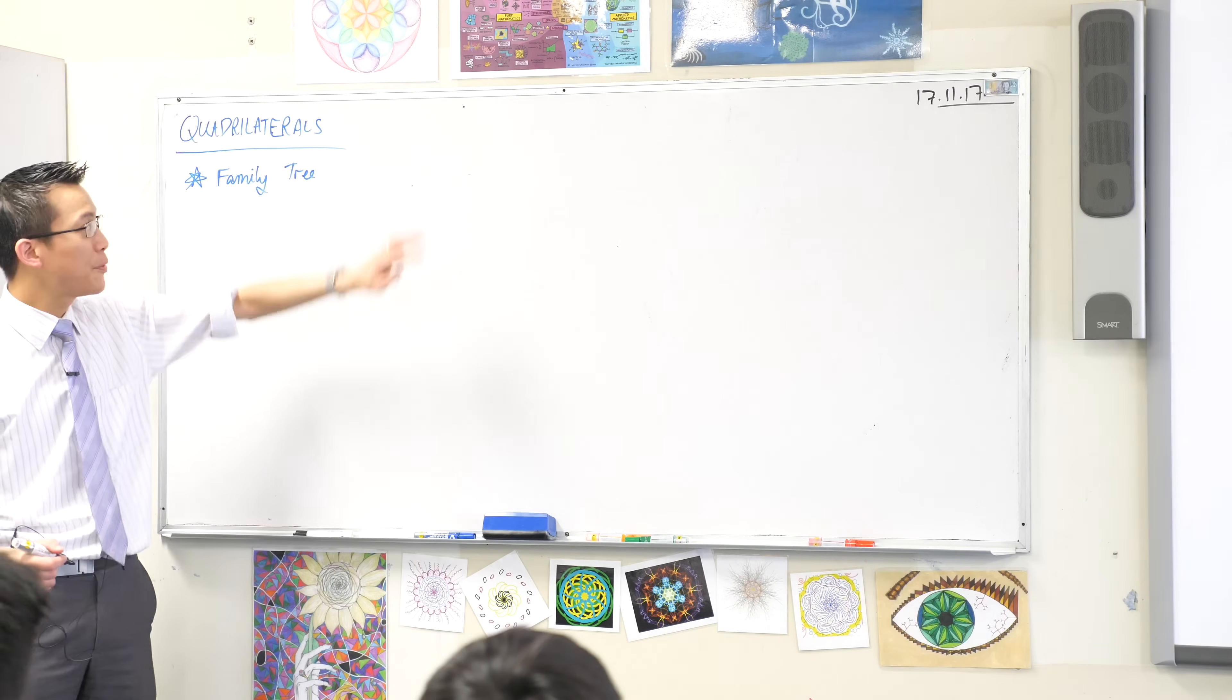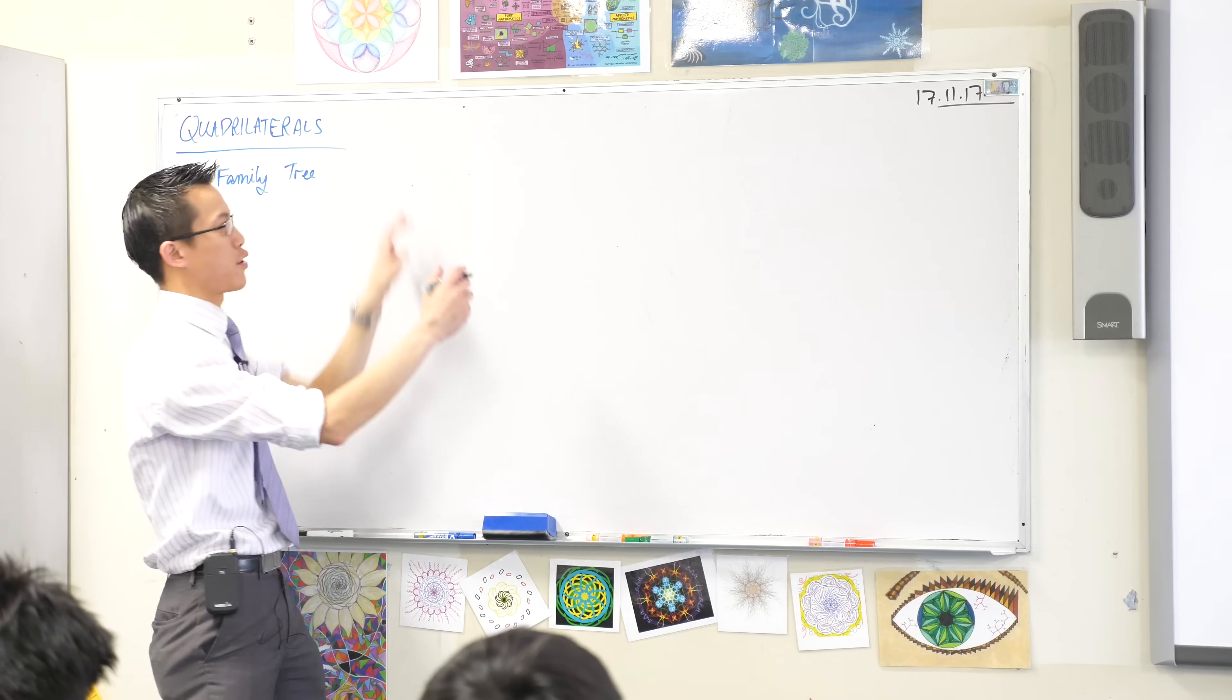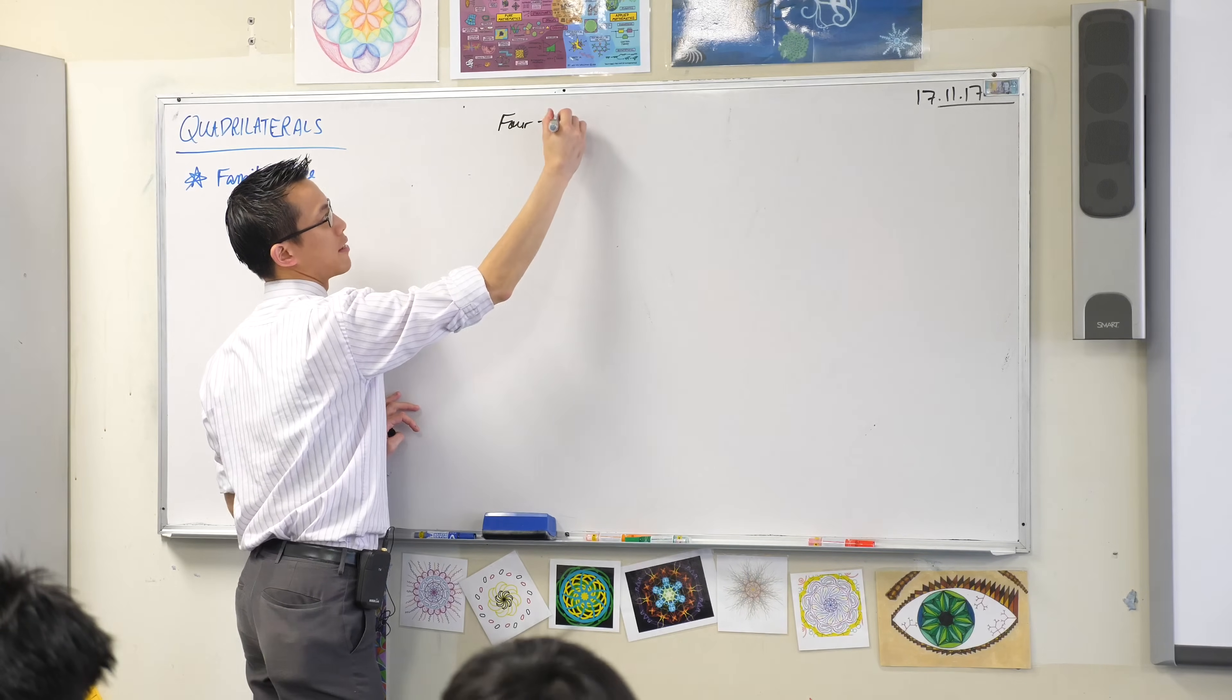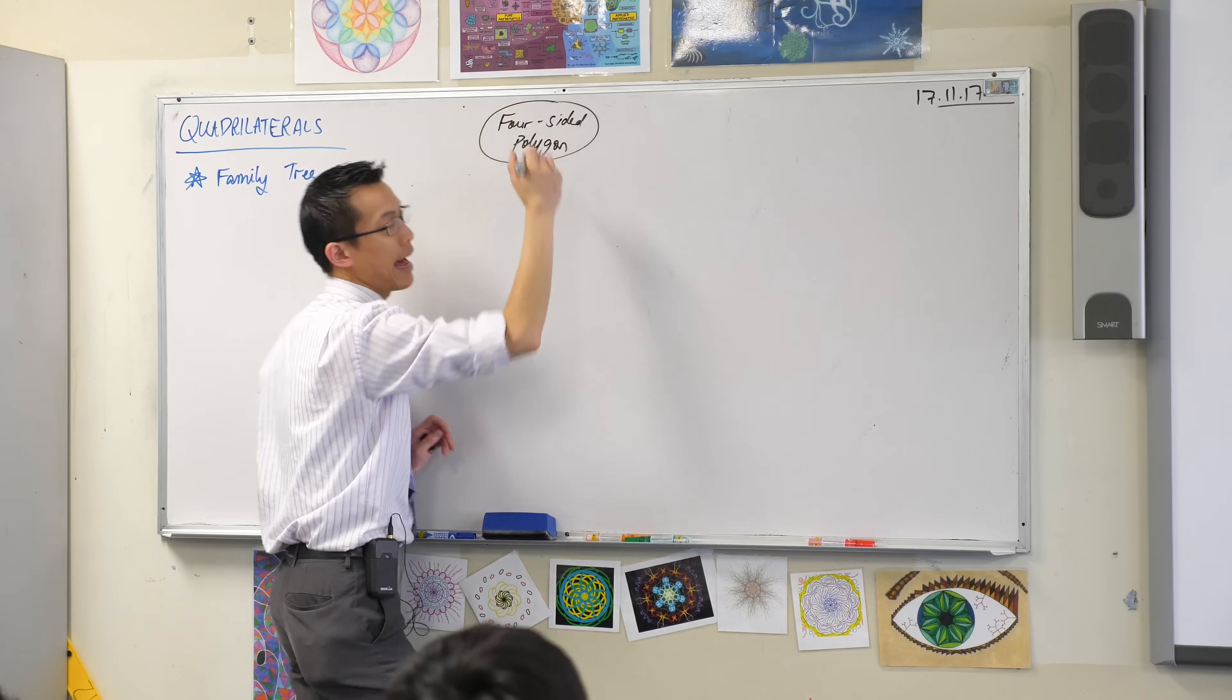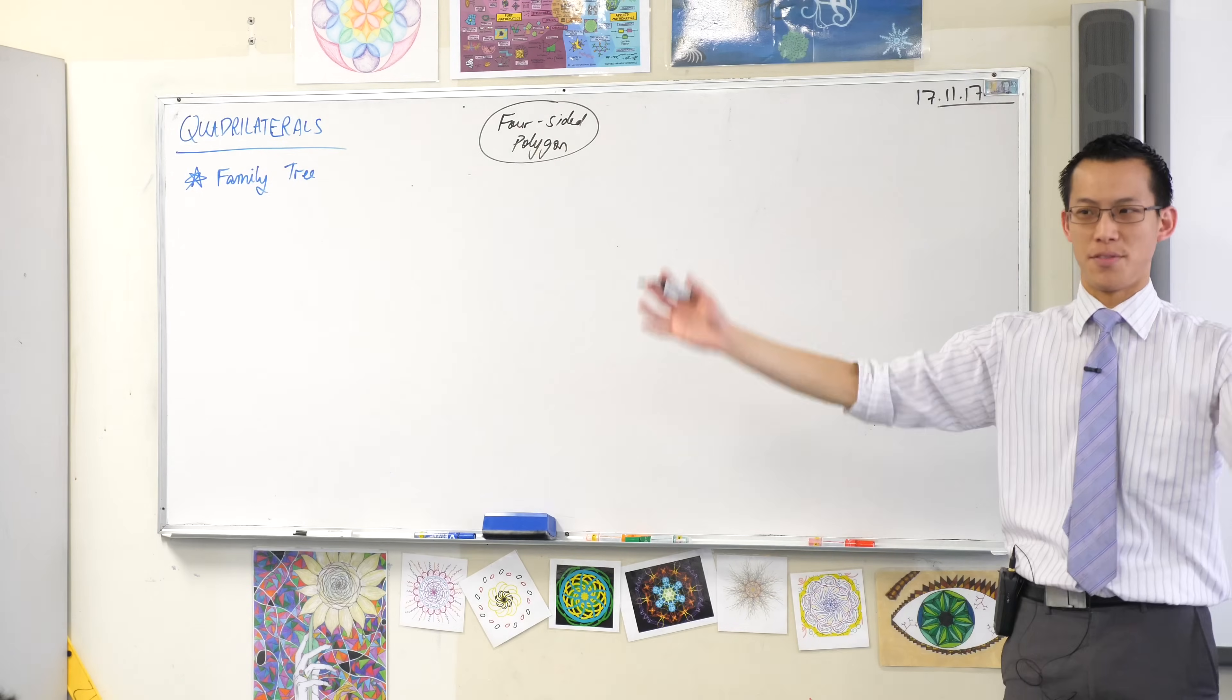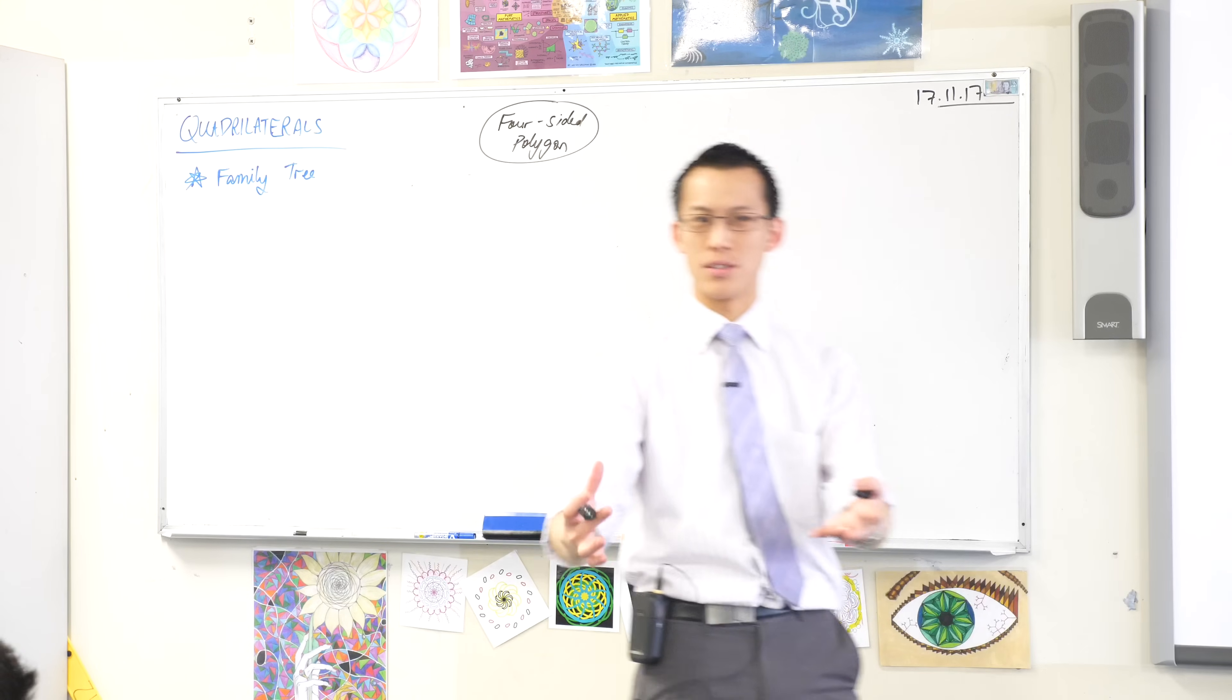So what we're going to begin with, up the top of the family tree, is kind of like the big great-grandfather of anything, which is just a four-sided polygon. That's as basic as you can be, and still be a quadrilateral. And what I'm going to show you is the descendants of this guy, as we add more and more specific features or characteristics.